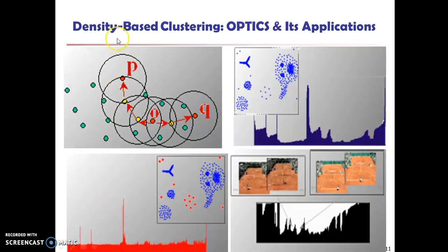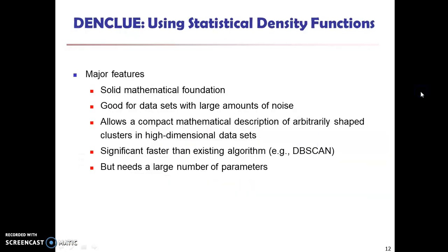Clustering here is based on density, such as density-connected points. The density-based clustering algorithm has played a vital role in finding nonlinear shape structures based on the density. Based on the density of the data points only, we are going to have a cluster, and that cluster will have a nonlinear shape. Density-based spatial clustering of applications with noise (DBSCAN) is the most widely used density-based algorithm. There we are using two concepts: one is density reachability, another is density connectivity.